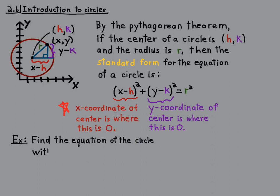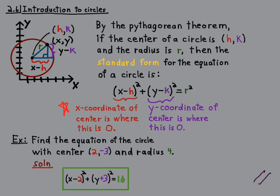So, for example, find the equation of the circle with center (2, -3) and radius 4. So this is a really easy problem. You just write (x - 2)² + (y + 3)² = 16. So the quantity (x - 2) squared, and plus the quantity (y + 3) squared equals 16.